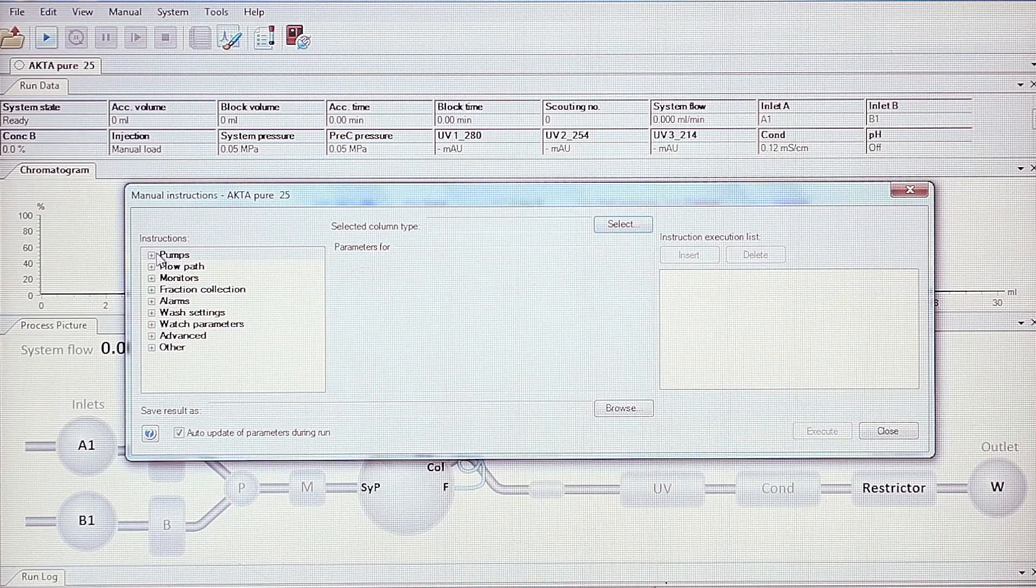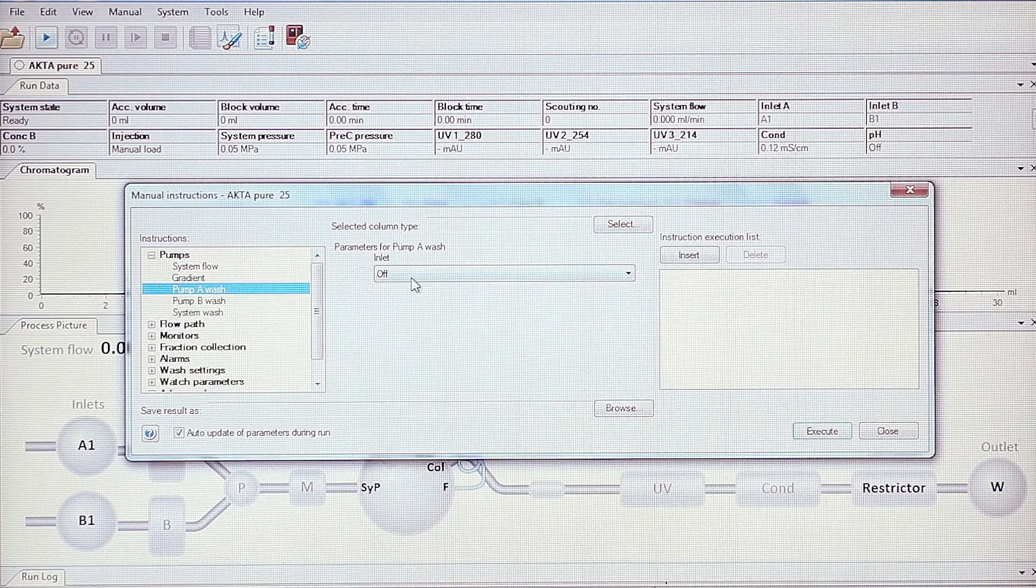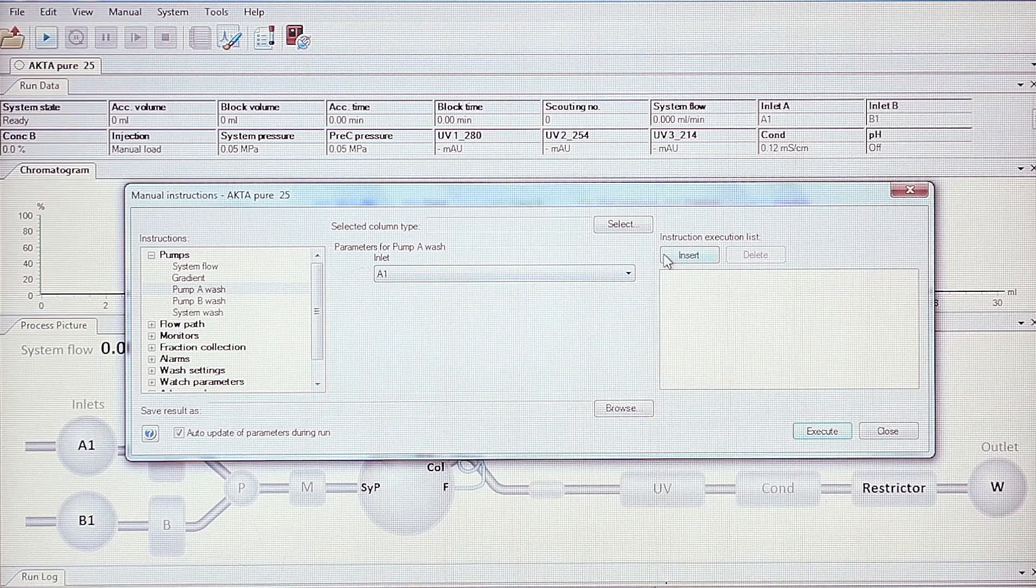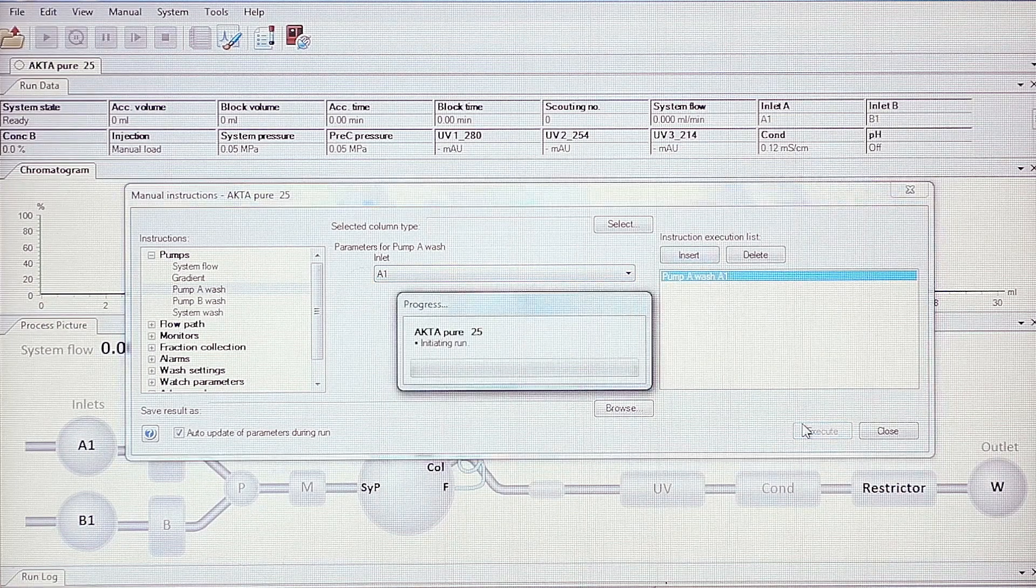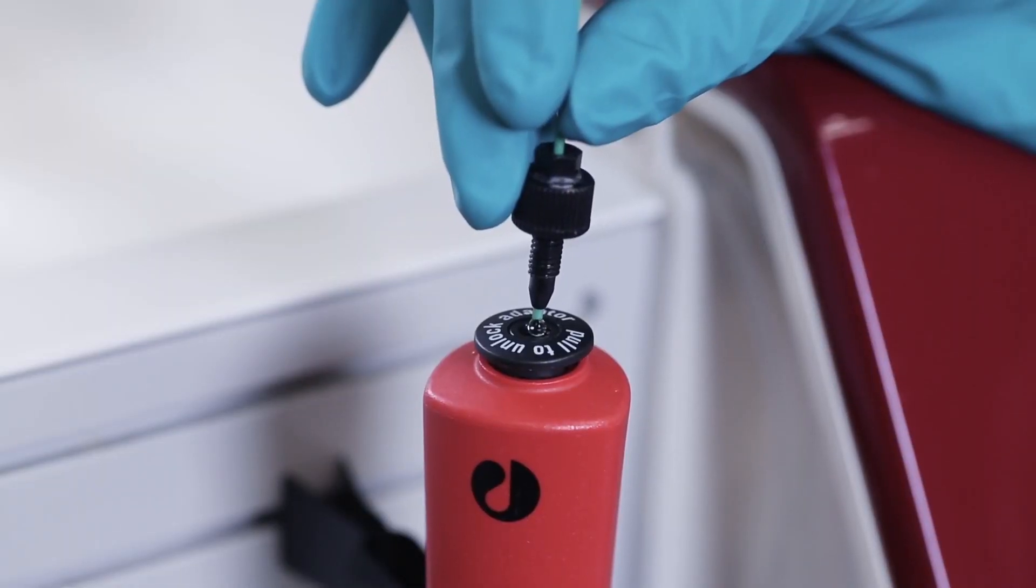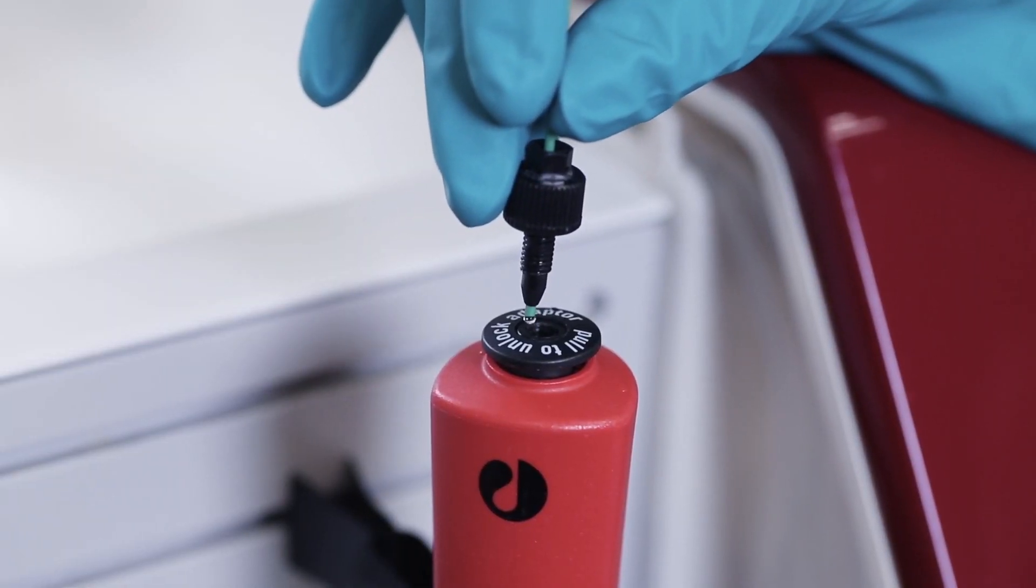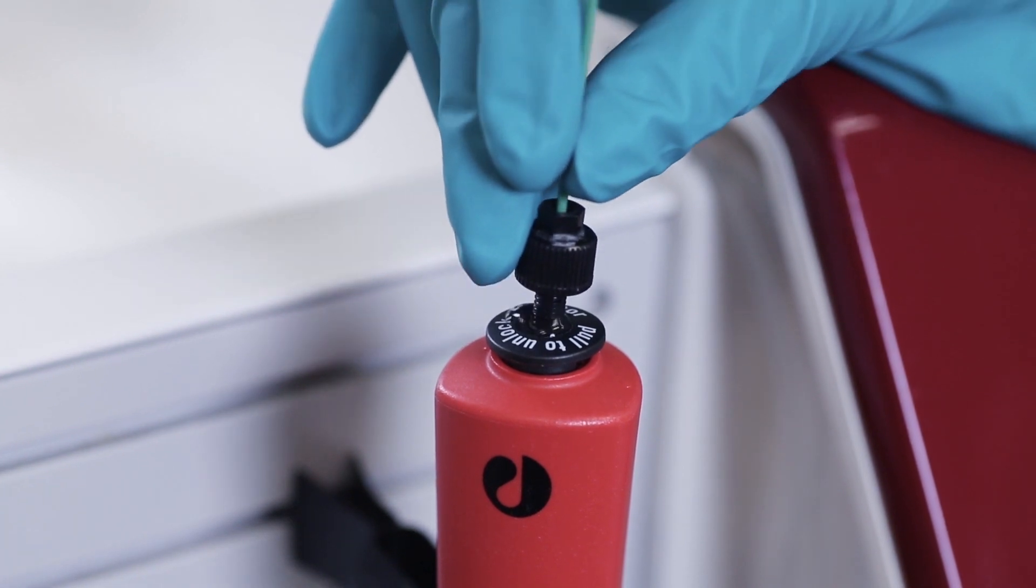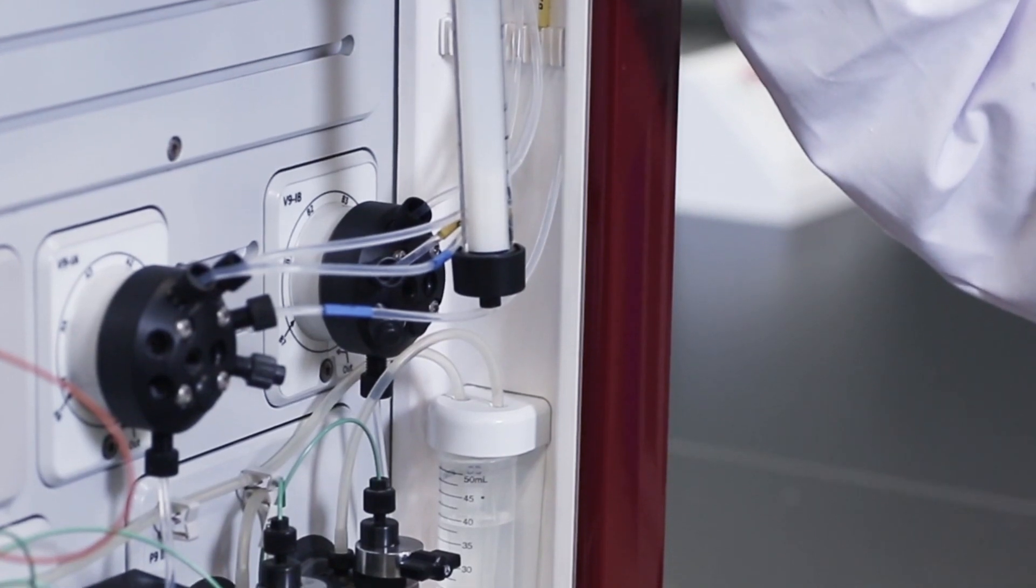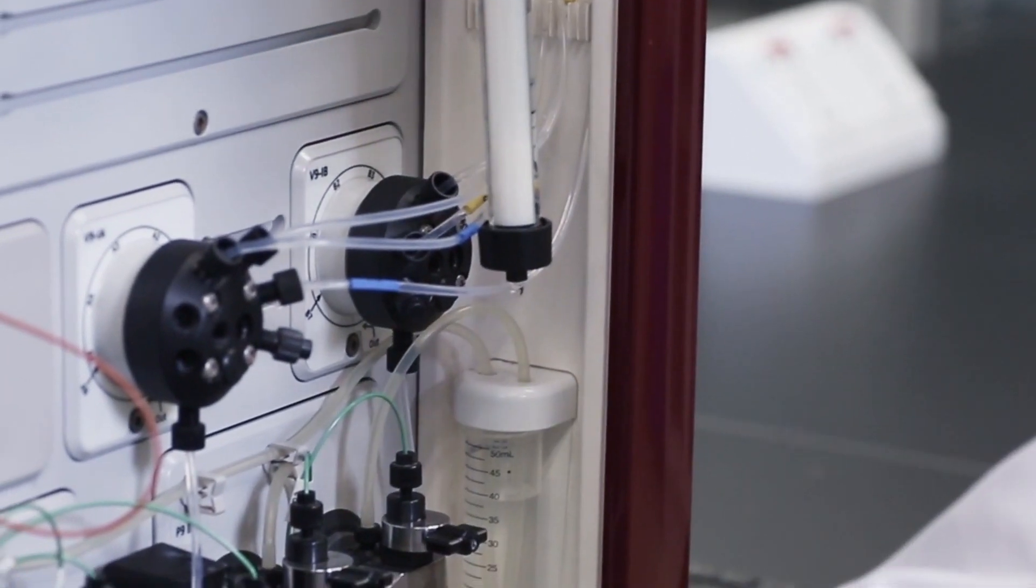Use the pump wash function in Unicorn to remove any air in the system or tubing. Ensure that the pressure alarm is set according to the column hardware specification. See the column instructions for details. Start the pump and attach the tube to the top of the reservoir at low flow rate with a drop-to-drop connection. Avoid introducing air bubbles. Place a beaker for waste under the column and remove the stop plug.